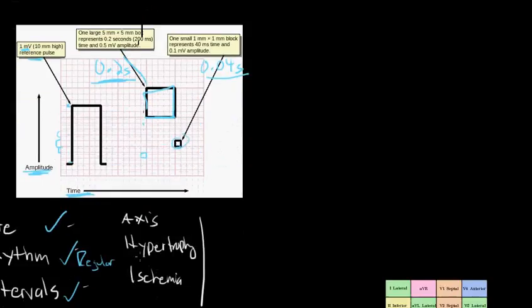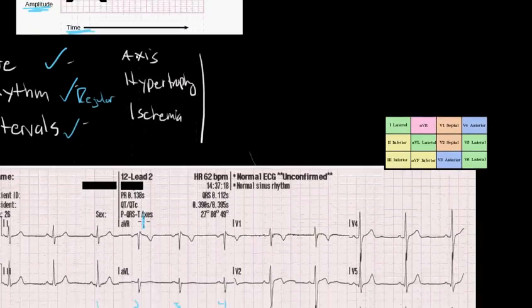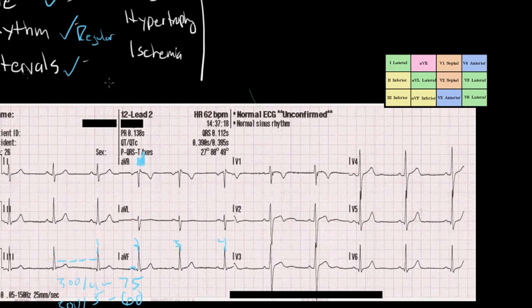Okay. Good. Now that we've reviewed the interval, let's go back here to finish off our systematic method of looking at EKGs. So we've looked at intervals and we find that all our intervals are okay. Next, we look at axis.